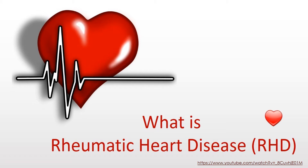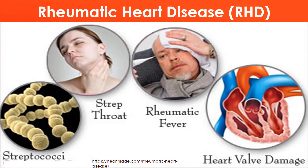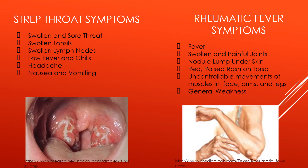Rheumatic heart disease was previously a much larger concern in history before the current advancements of antibiotics today. The first step in developing rheumatic heart disease is the introduction of streptococcal bacteria in the patient. This bacteria causes a respiratory infection commonly known as strep throat. Strep throat can easily be diagnosed and treated with antibiotics and usually is in today's developed world. If strep throat is not properly treated, the inflammatory disease known as rheumatic fever can develop in 2 to 4 weeks. Rheumatic heart disease is characterized by the permanent damage of the heart tissue due to rheumatic fever development.